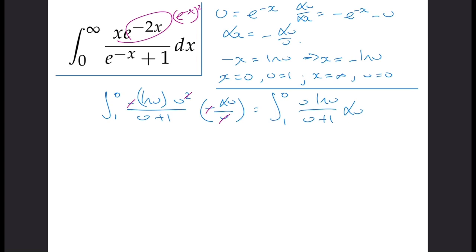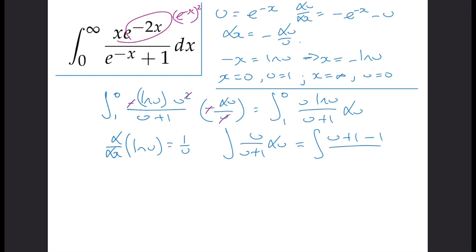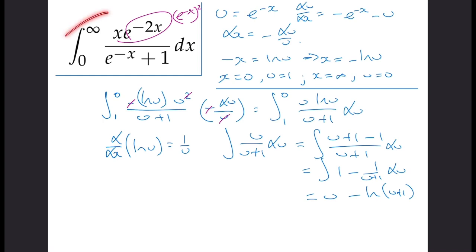The next thing we're going to do is integration by parts. We have one section which is log u, and differentiating log u gives us one over u. Now if we go to integrate u over (u plus one), we can rewrite the numerator as u plus one minus one, all over u plus one. We can separate that out as one minus one over (u plus one), and integrating gives us u minus the log of (u plus one). We're not worried about the modulus here because everything is positive.